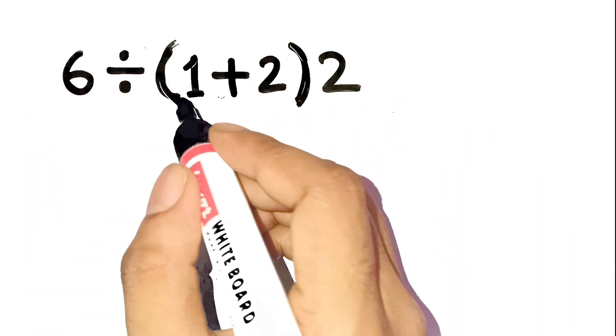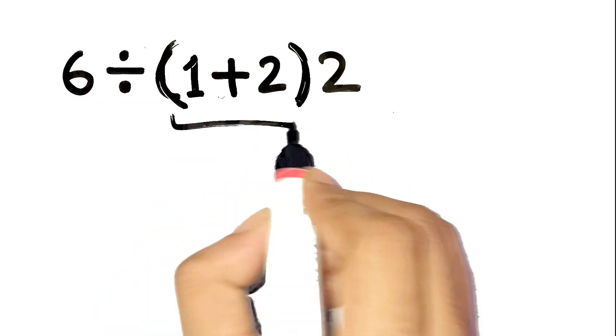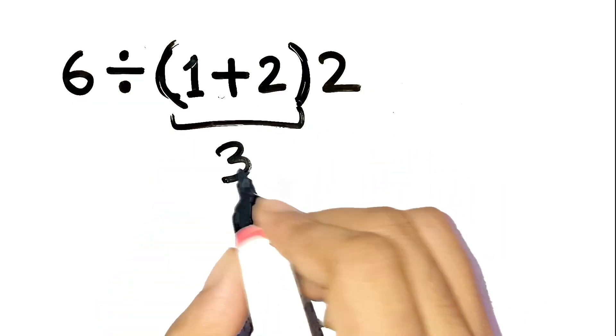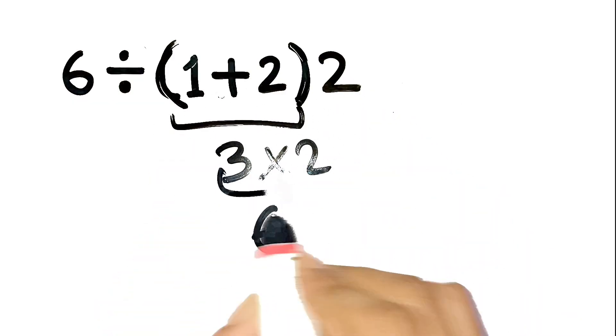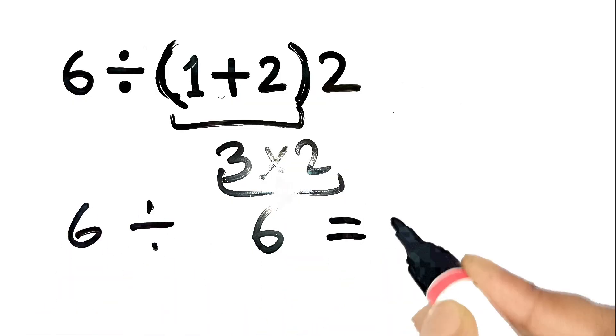Okay, I know what most people do here. 1 plus 2 is 3, right? Then multiply by 2 gives 6. And then 6 divided by 6 is 1.